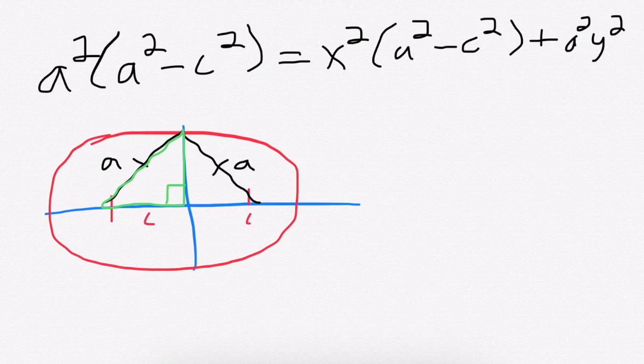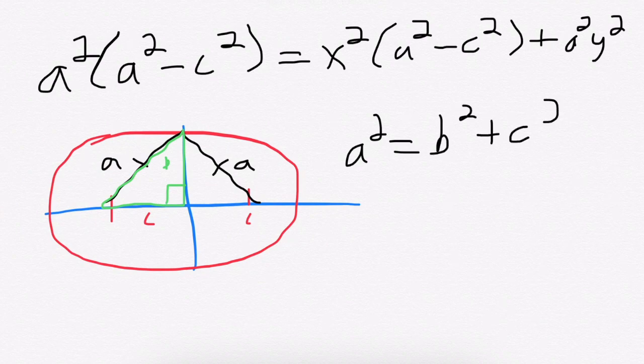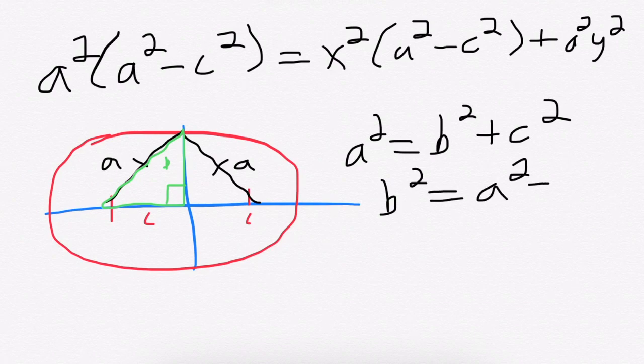We also defined this upper leg on the triangle to be b, or half the length of the minor axis, and the relationship is that a squared, the hypotenuse, is equal to b squared plus c squared, also known as b squared equals a squared minus c squared.